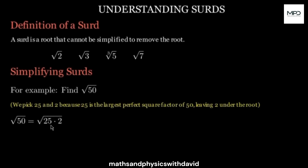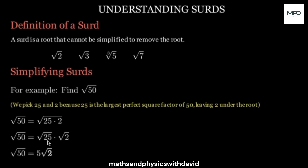We need to multiply these two numbers together and then split them like this, letting them have their own square root. At the end of the day, we are going to have the square root of 25, which is 5, and the square root of 2, which remains as square root of 2.